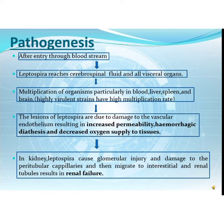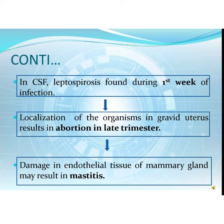Highly virulent strains have a high multiplication rate. The lesions of Leptospirosis are due to damage to the vascular endothelium, resulting in increased permeability, hemorrhagic diathesis, and decreased oxygen supply to tissues. In the kidney, Leptospira reaches through the hematogenous route, causing glomerular injury and damage to peritubular capillaries, then migrates to the interstitium and renal tubules, resulting in renal failure. In cerebrospinal fluid, Leptospira is found during the first week of infection. Localization of the organisms in the gravid uterus results in abortion, which generally occurs in the last trimester. Damage to the endothelial tissue of the mammary gland may result in mastitis.